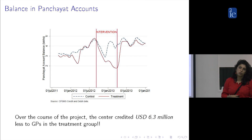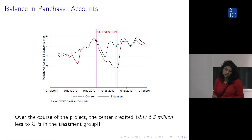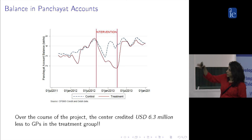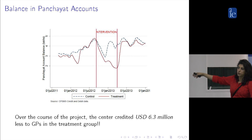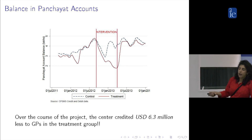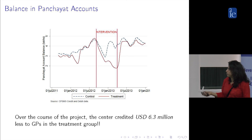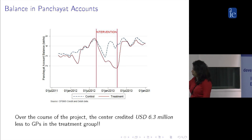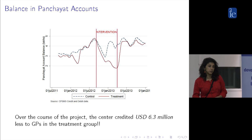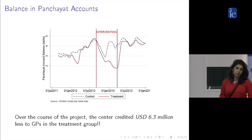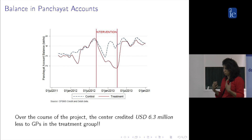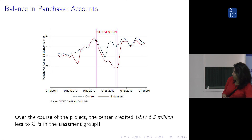Related to that is float. This is somewhat mechanical: if you're spending less money and you're only pulling funds when spending, you're going to keep less money in your accounts. What you see here is a very significant reduction in float that increases over time. Over the course of the project, the center credited roughly 6.3 million dollars less to the treatment group — a very significant reduction in spending.